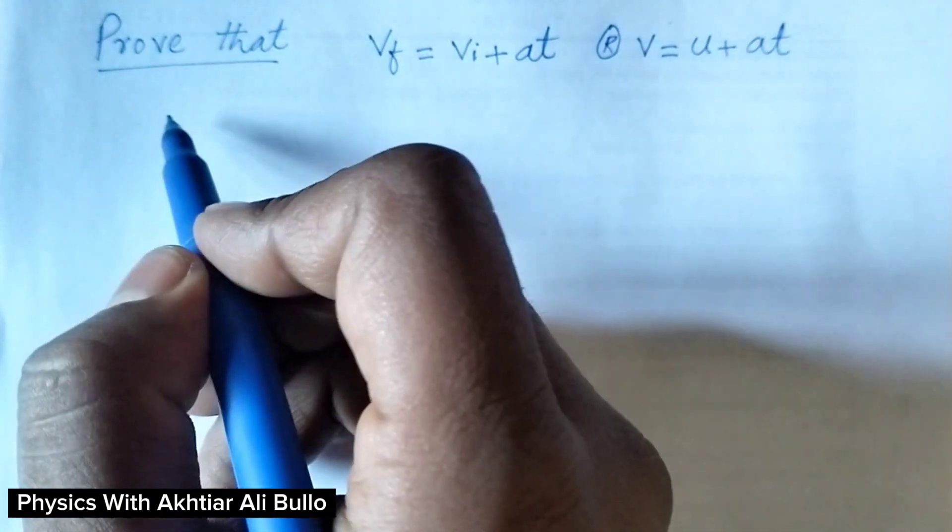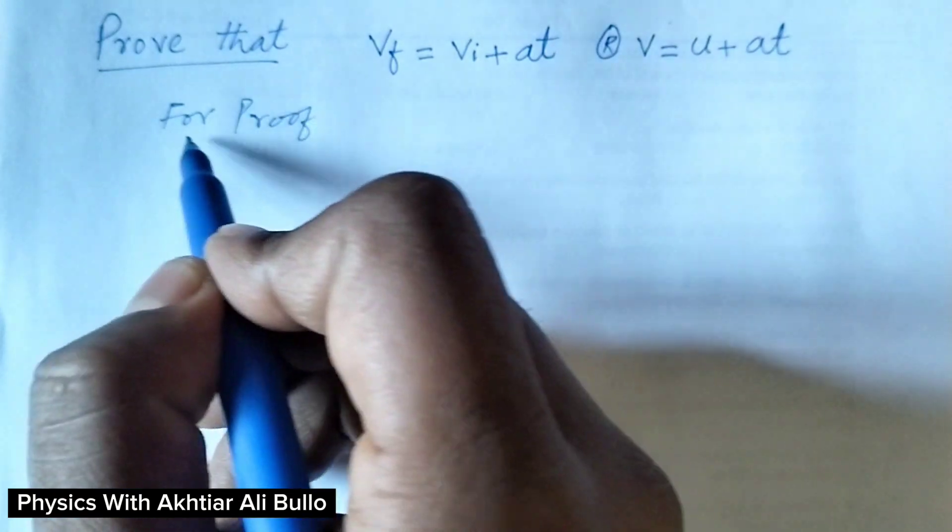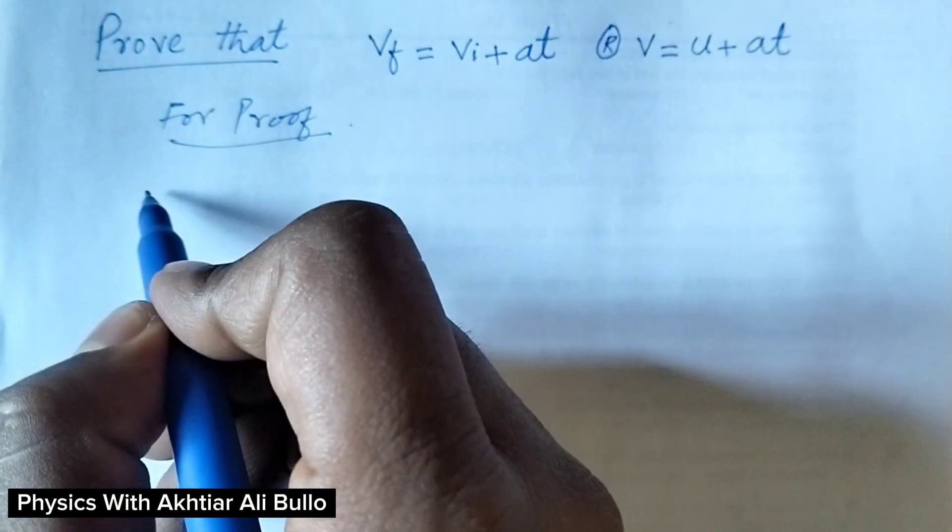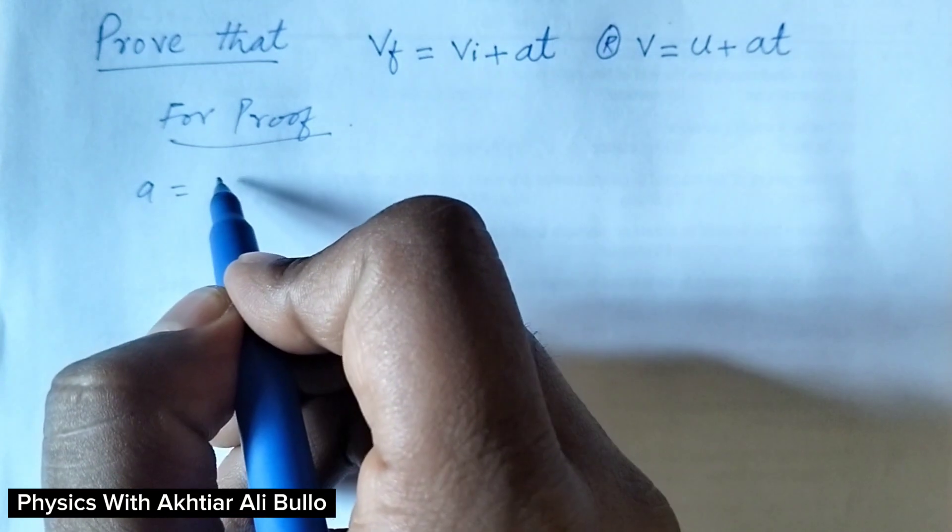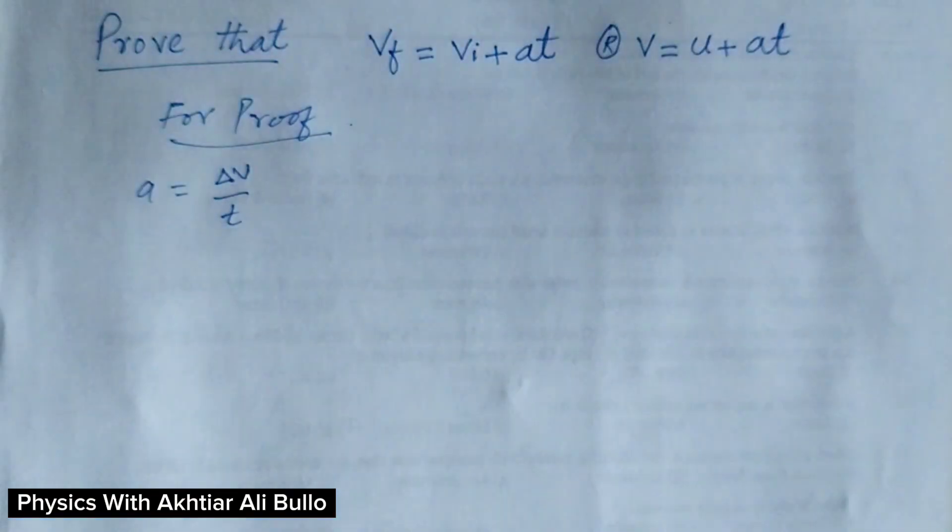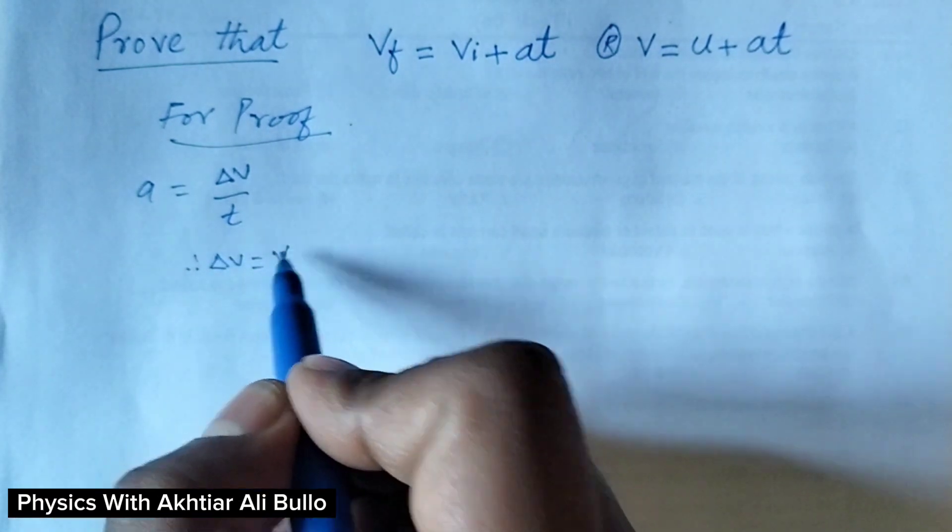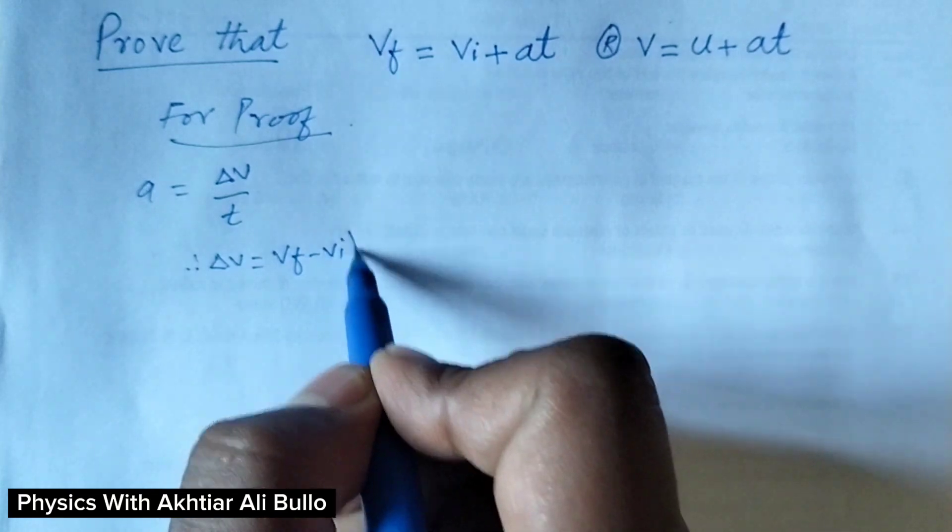For proof, acceleration is equal to change in velocity per unit time. Delta V is equal to VF minus VI.